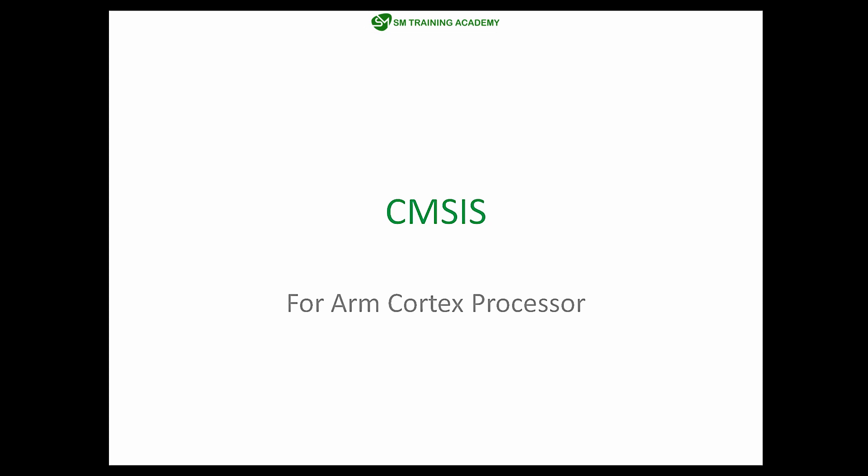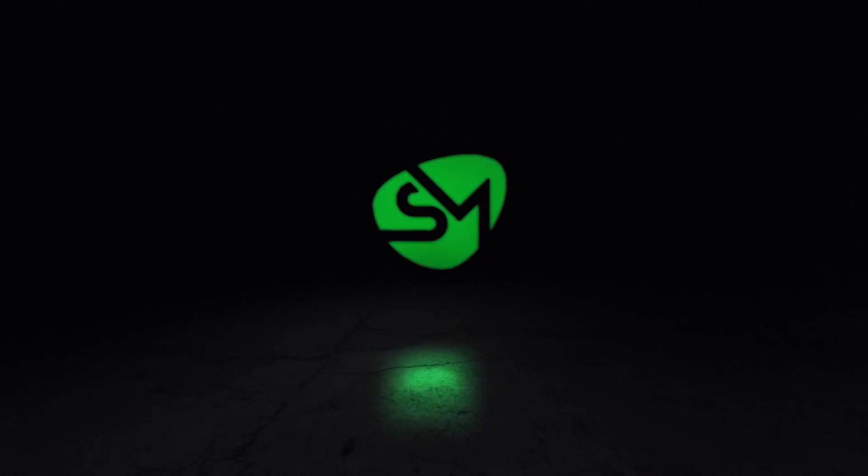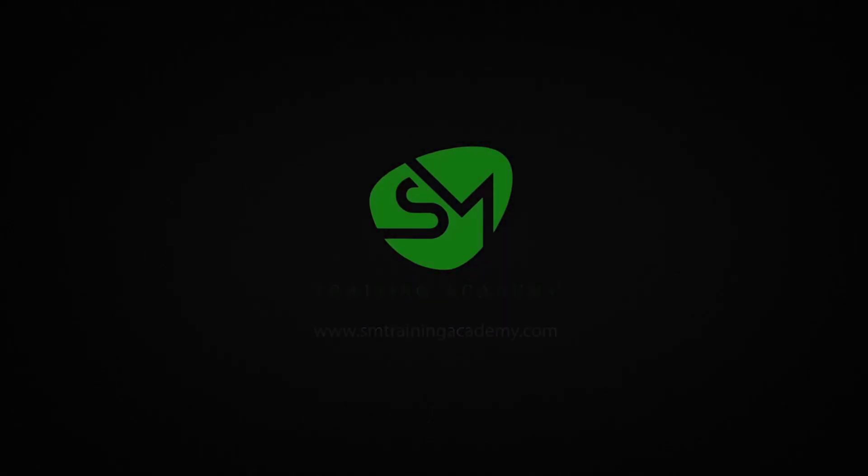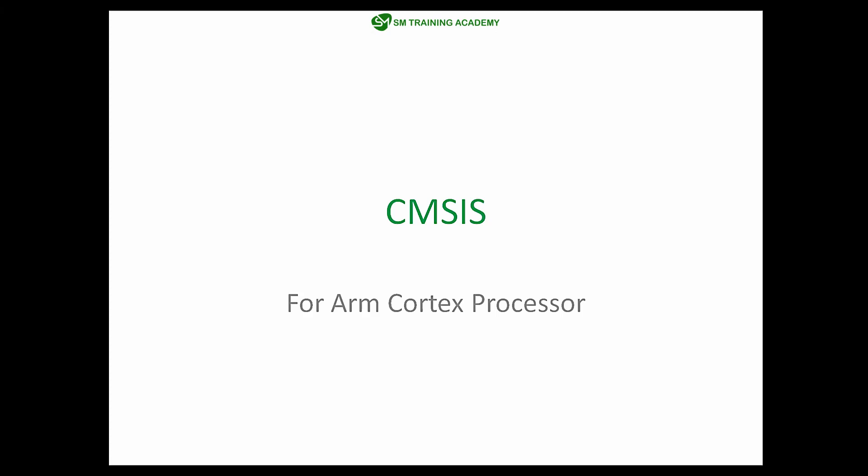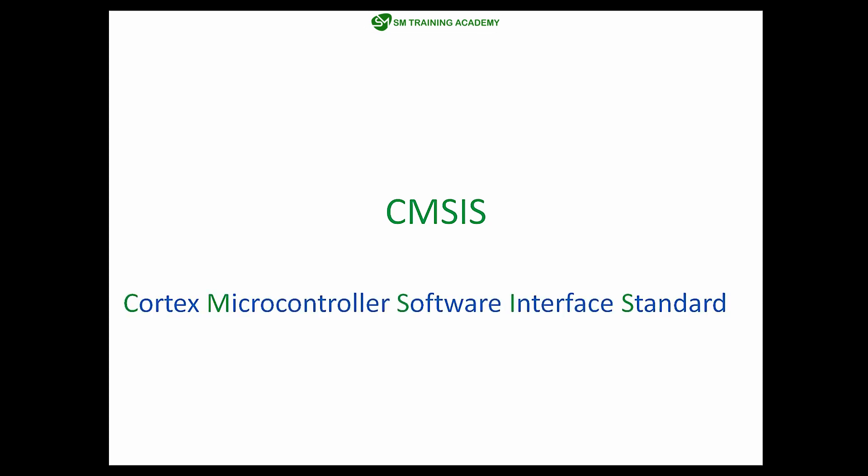Hello everyone. In this video we are going to discuss about what CMSIS is for ARM Cortex processors, along with the CMSIS core file structure in detail. Let's get started. CMSIS stands for Cortex Microcontroller Software Interface Standard. It is a set of standards which needs to be followed for programming the ARM Cortex Microcontroller.